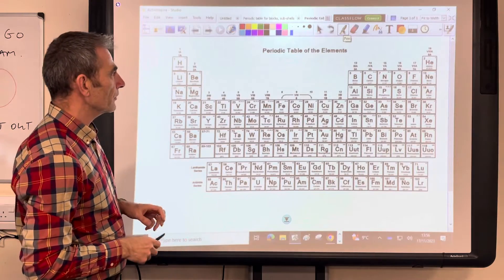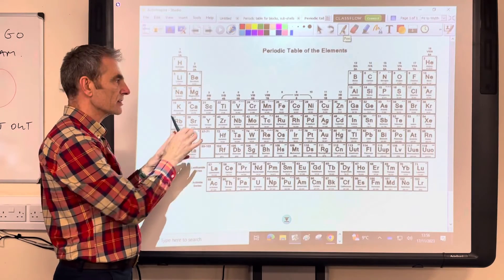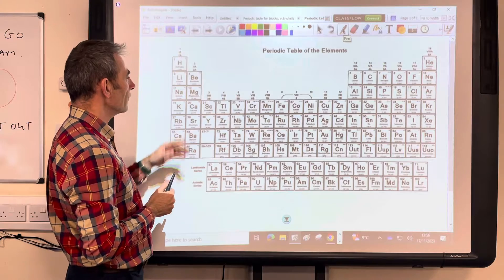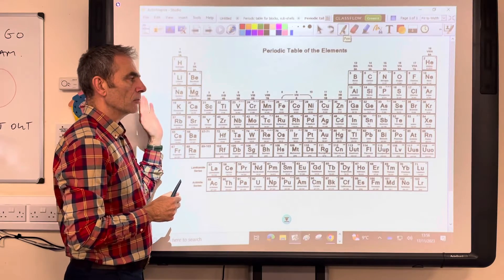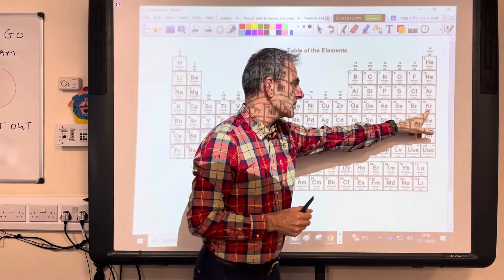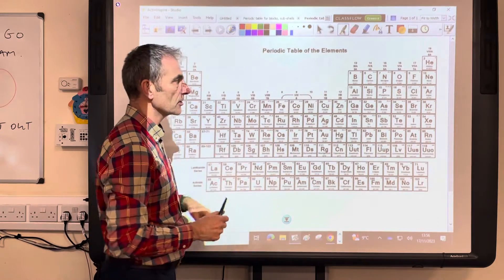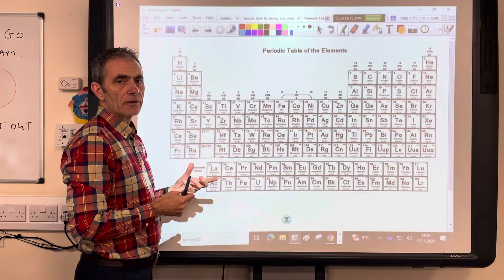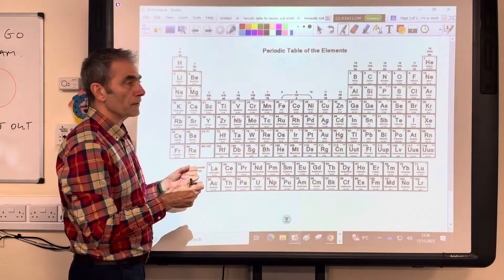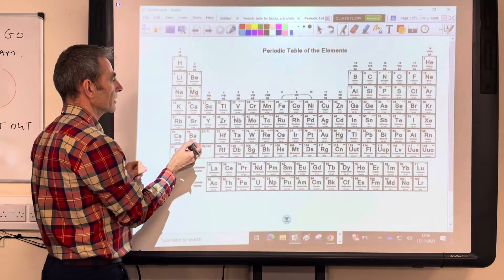Quick video on electron configuration and how it links to the position of the element in the periodic table. We're just going to consider up to krypton because for A-level chemistry that's as far as we need to go. So the first thing I'm going to do is look at the subshells that are filling up in the different parts of the periodic table.